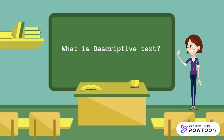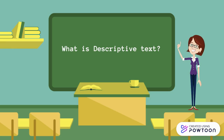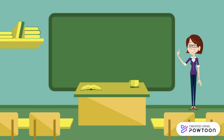Descriptive text is a text which says what a person or a thing is like. Its purpose is to describe and reveal a particular person, place, or thing.